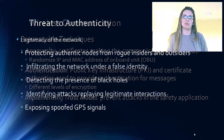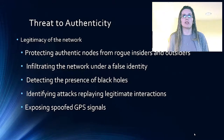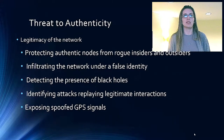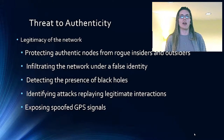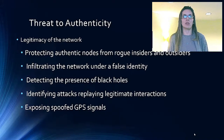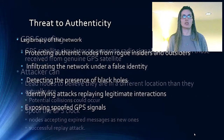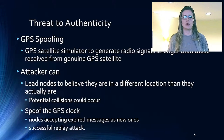Hi, my name is Lucia. When it comes to the threat of authenticity in the field of security, ensuring the validity of the network includes protecting authentic nodes from insiders and outsiders infiltrating the network under a false identity, detecting the presence of black holes, identifying replay attacks, and exposing spoofed GPS signals. Despite the potential gains from network manipulation, there are strong technical difficulties in carrying out a replay attack, rendering this a minor threat, known as GPS spoofing.